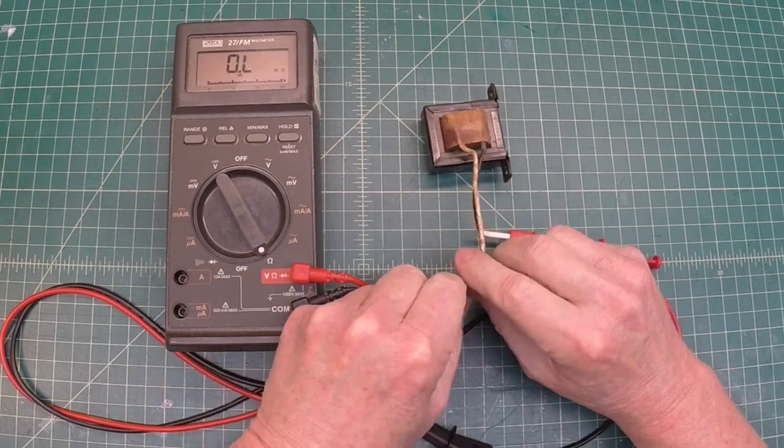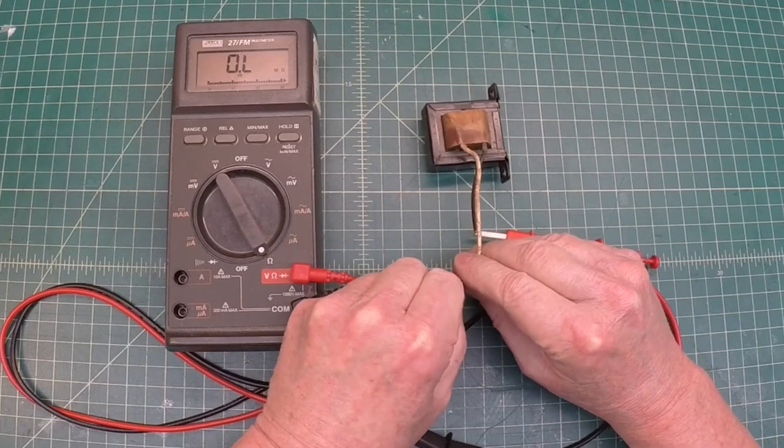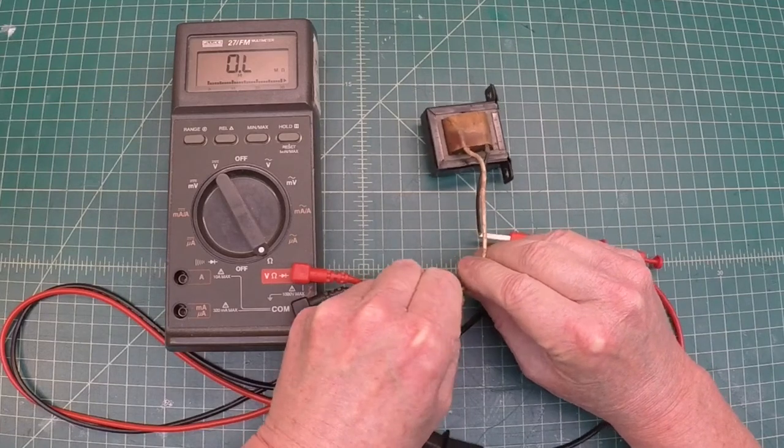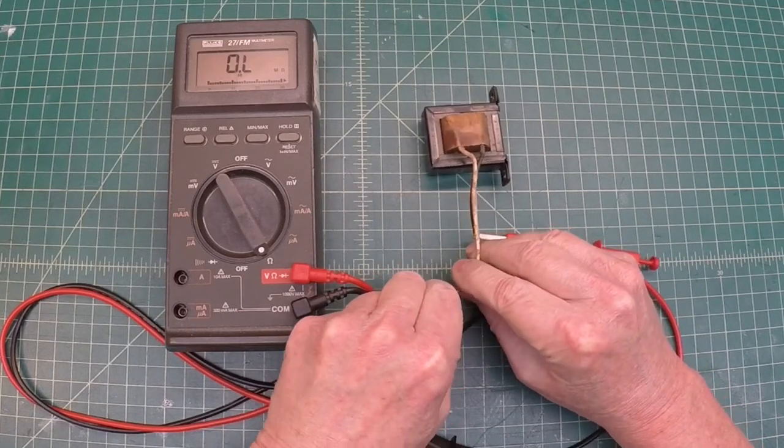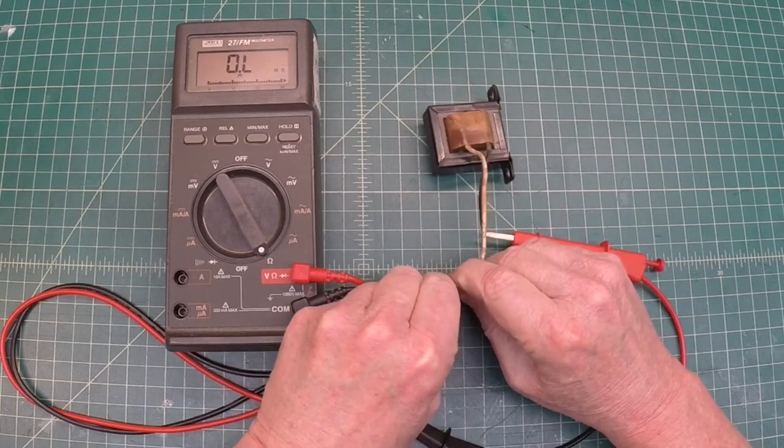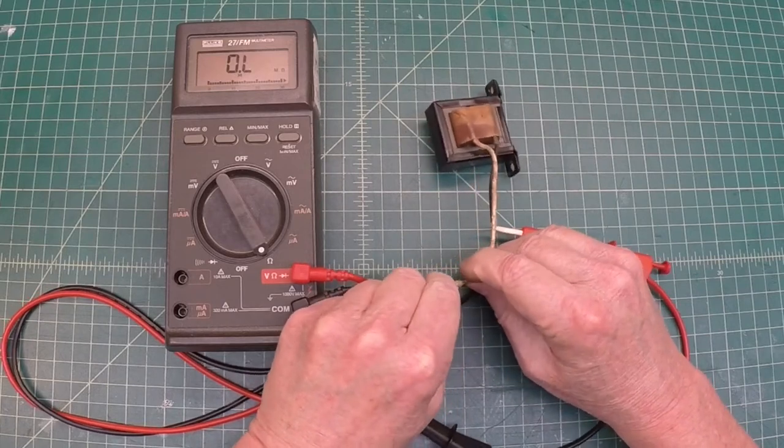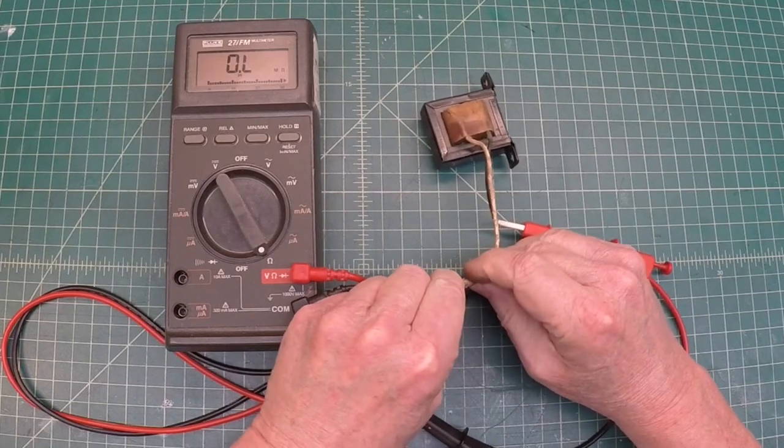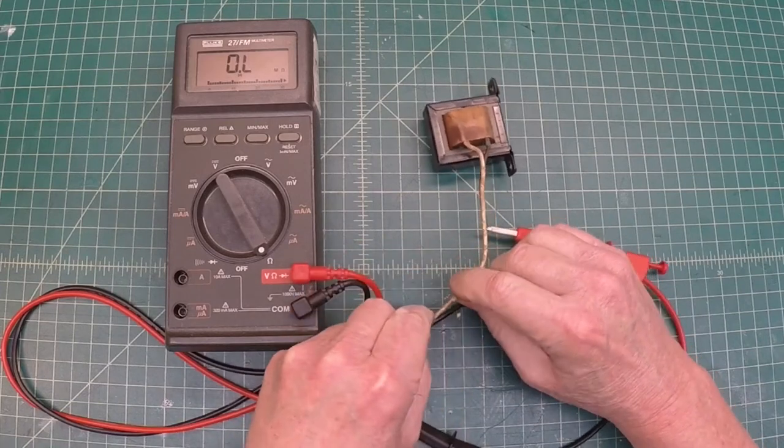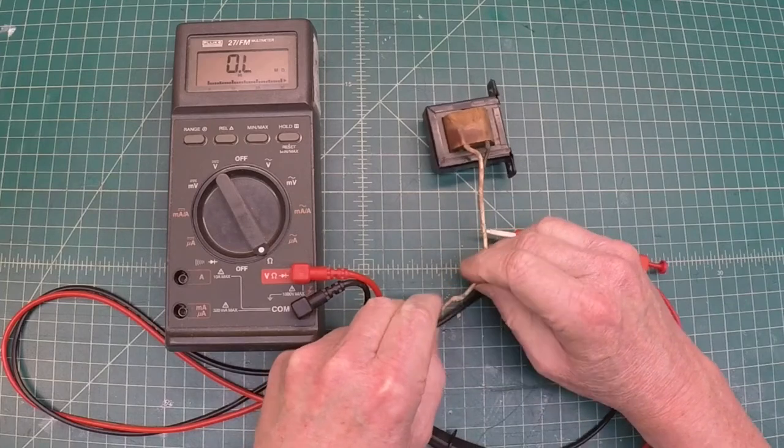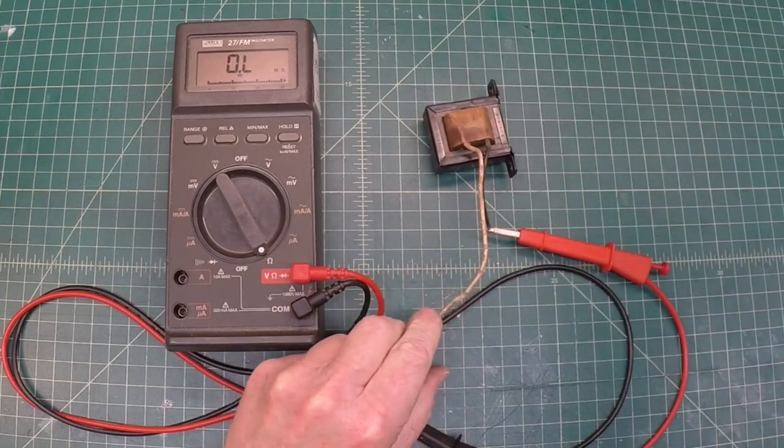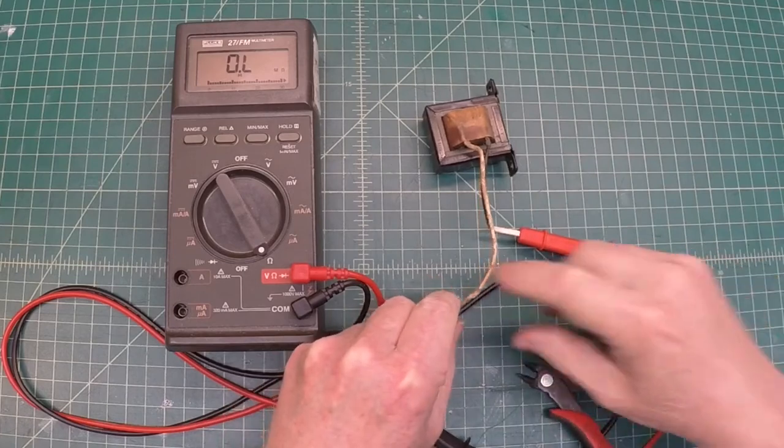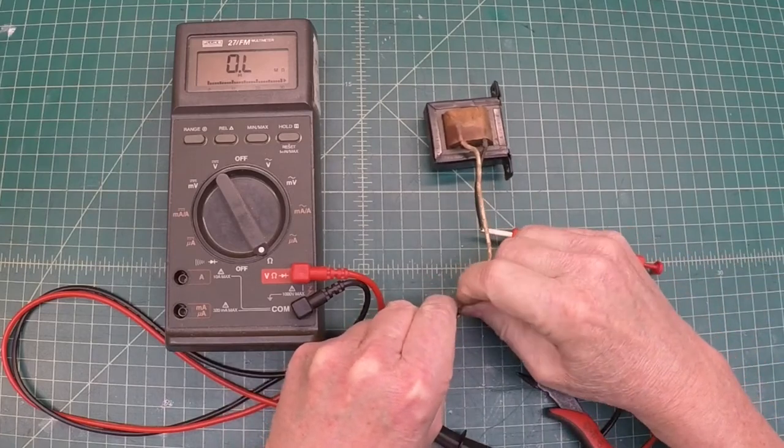This feels like a soft spot here in my mind. I'm not saying it's burned open or anything, and it's probably not because it's not a solid wire, it's stranded. When I'm moving that around, it still shows open, but it sure does feel odd in this area. I think I'm going to just go ahead and give this a cut in this area right here just to see what we've got underneath.